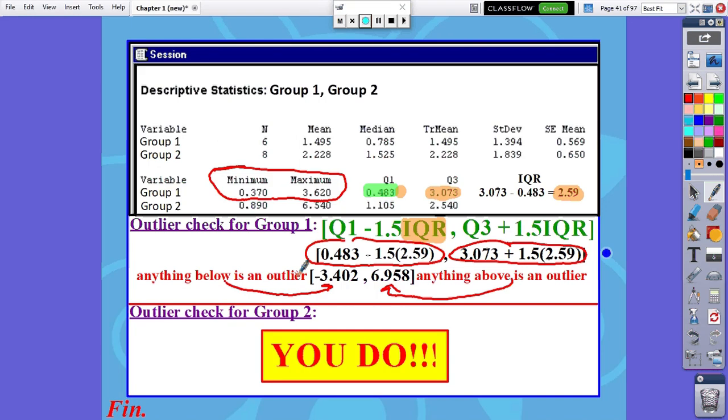So I don't have any what we'll call lower outliers, no outliers on the small end of my data set. Then we say, do I have anything bigger than 6.958? I go to my maximum, and the maximum stops at 3.620. I don't have any numbers that are bigger than 6.958 because I know my biggest number is 3.620. So I have no outliers at all. Overall, group one has no outliers.